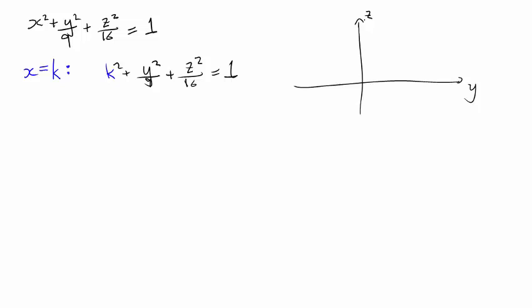We've let it be a generic k, but we could replace k with 1, 2, 3, etc. A natural question to ask is: can k be anything, or is it restricted in some way? To see that, let's rearrange the equation: y squared over 9 plus z squared over 16 equals 1 minus k squared. Comparing the left-hand side with the right-hand side, the left-hand side is always going to be positive, no matter what values of y and z you plug in.